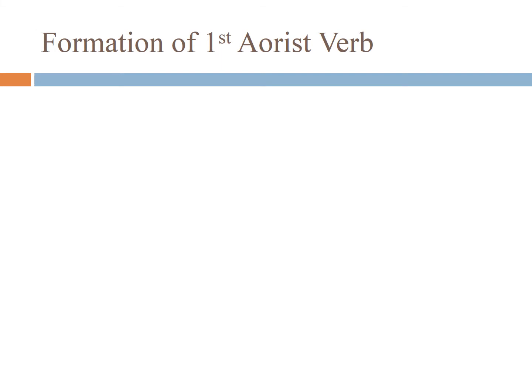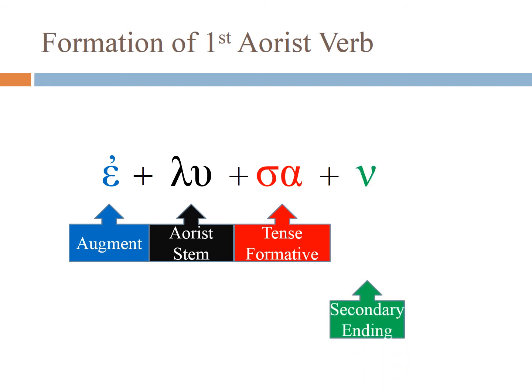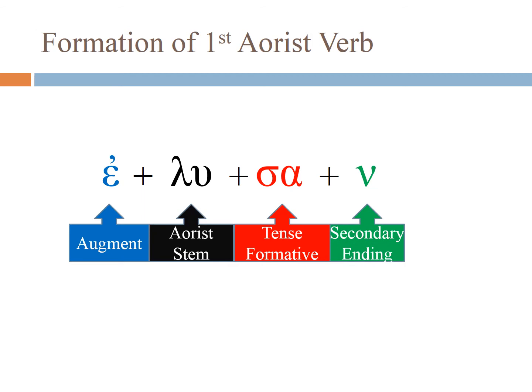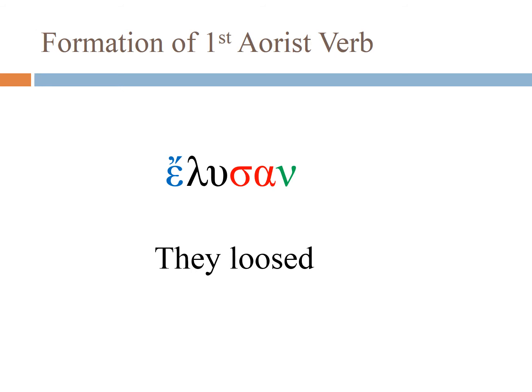Let's look at the formation of the first aorist verb. We begin with an aorist stem — we're using luo. Luo is a wonderful verb because its stem never changes. It is a regular verb, so its aorist stem will look just like its present stem. Other verbs, however, have very different spellings for the aorist than for the present. It has an augment, usually an epsilon — we'll look at when it's not. It has a tense formative; the tense formative is usually sigma-alpha. Then we put a secondary ending on it. It has an augment and secondary ending — this is a past tense. The two together give us elusan: 'they loosed.'